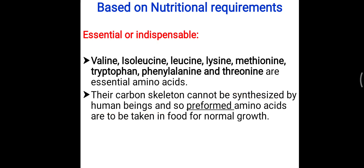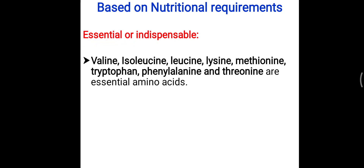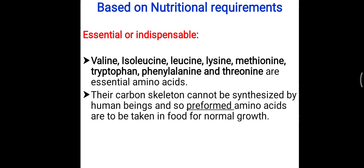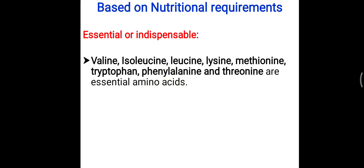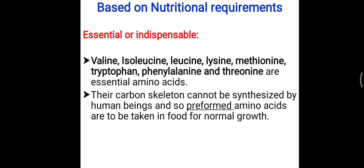The carbon skeleton of these amino acids cannot be produced or synthesized by our body, which is why they are called essential. The particular hydrocarbon chain or structure of these amino acids cannot be made by the body. Therefore, a pre-formed or ready-made form of these amino acids is needed to maintain normal health and normal growth.